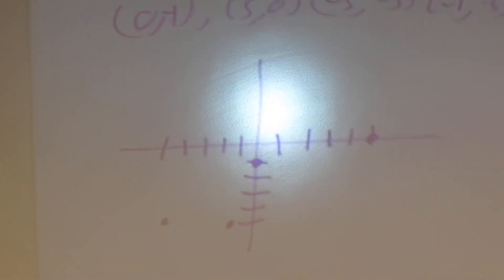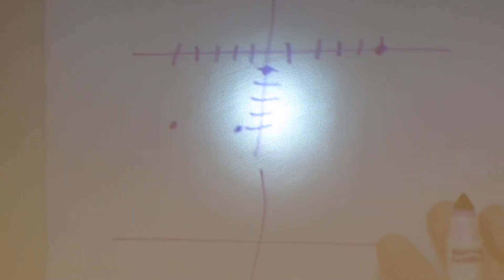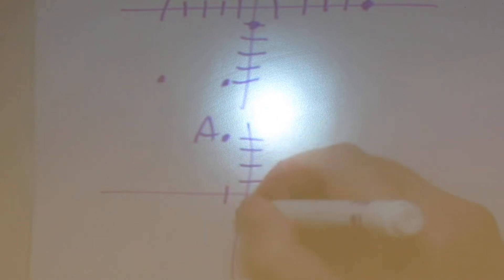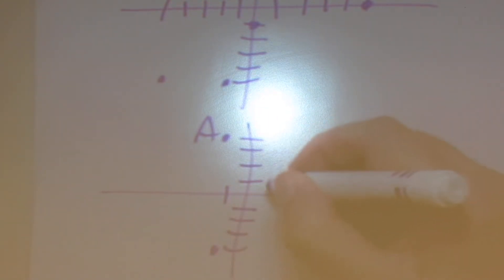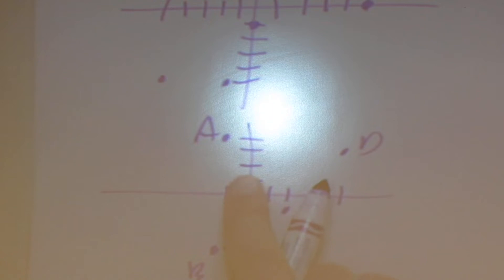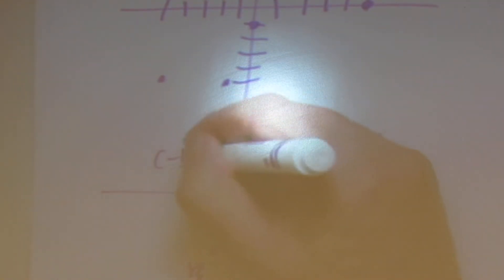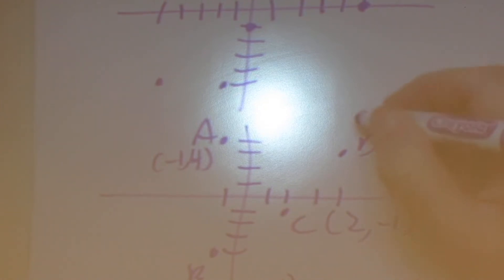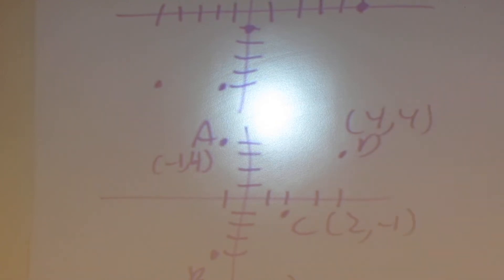Then you're given a graph that shows you points and you have to read the coordinates. Point A: we went back 1 and up 4, so it's (-1, 4). Point B: we went back 1 and down 4, so (-1, -4). For C: we went right 2 and down 1, so (2, -1). And for D: we went over 4 and up 4, so (4, 4).